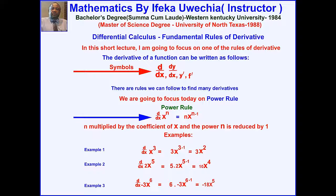What do we do? We multiply negative 3 by 6 and we reduce the power 6 by 1. Now, what do we have? We have negative 18x raised to the power 5.